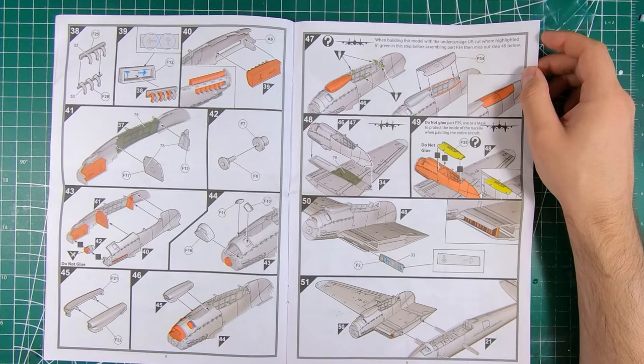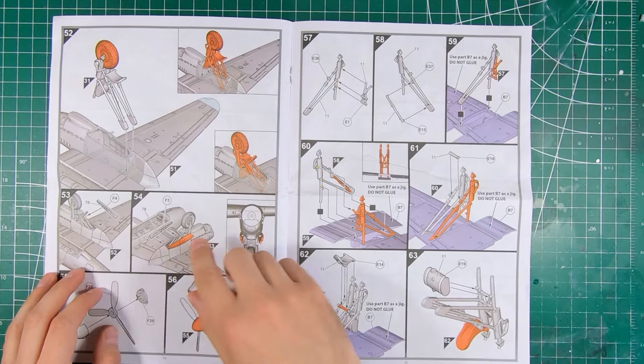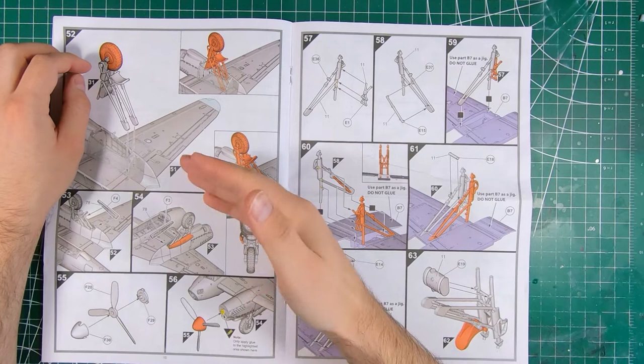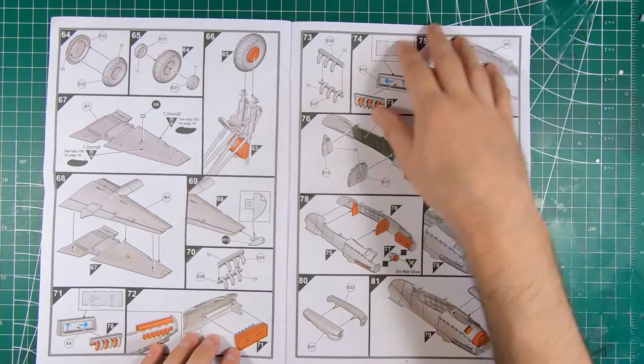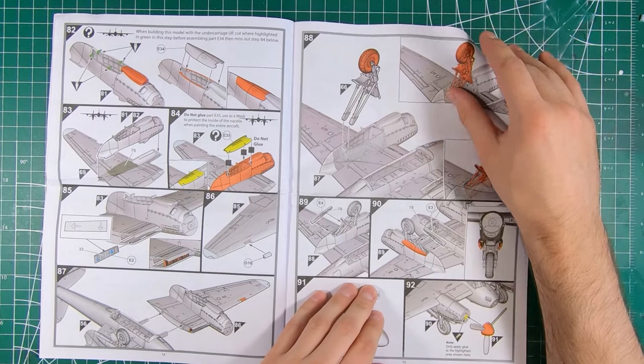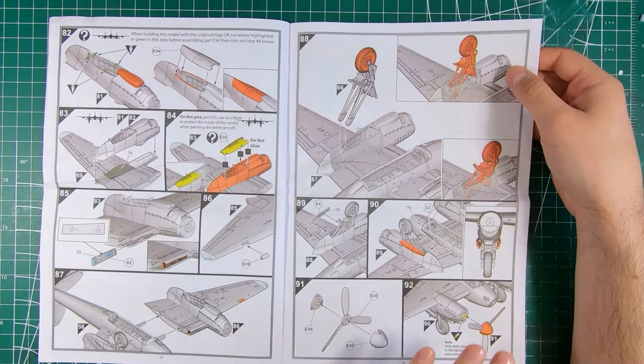Wing goes onto the fuselage. And then they want you to install the landing gear. Of course, leave that off until the end of the build. Doors, leave them off. Prop, leave that off. And that's one whole side of the airplane. Landing gear, nacelles, wash, rinse, repeat for the opposite side. Once again, leave your landing gear, leave your props, leave the doors separate until your final assembly.